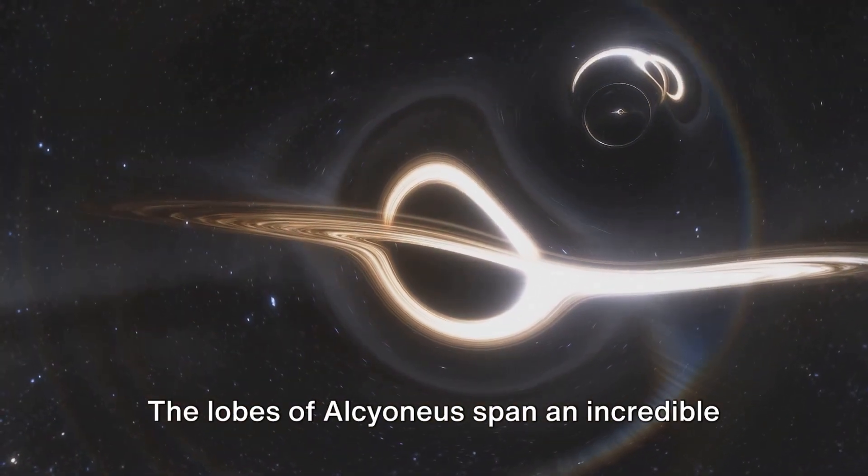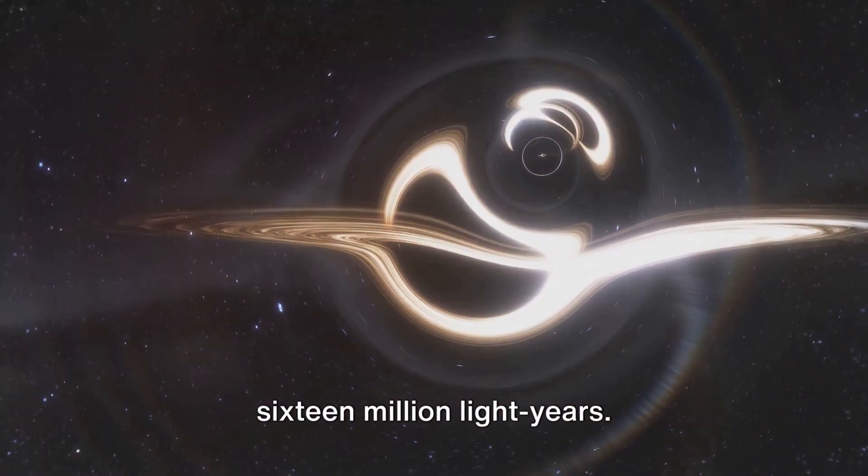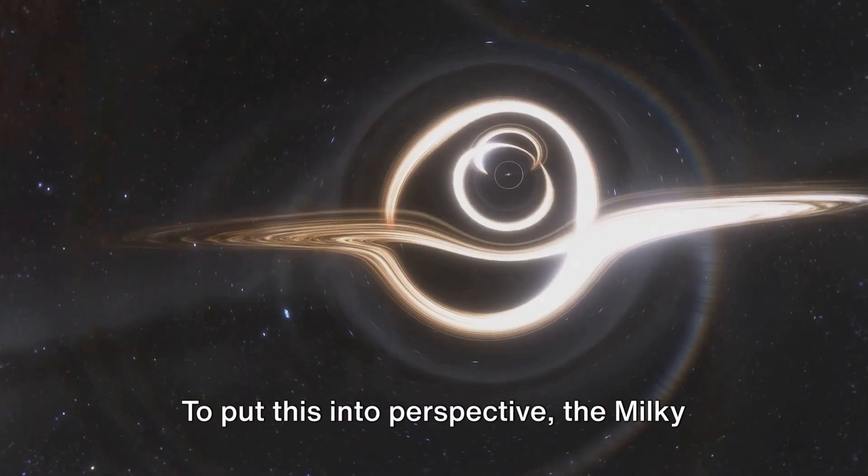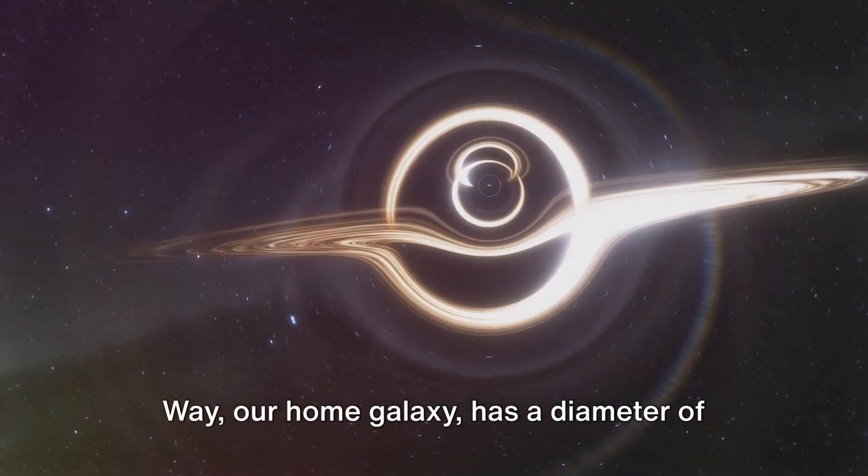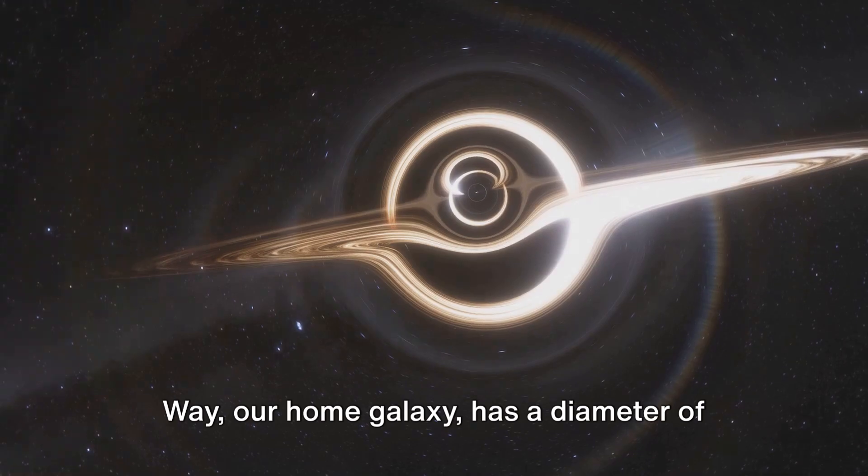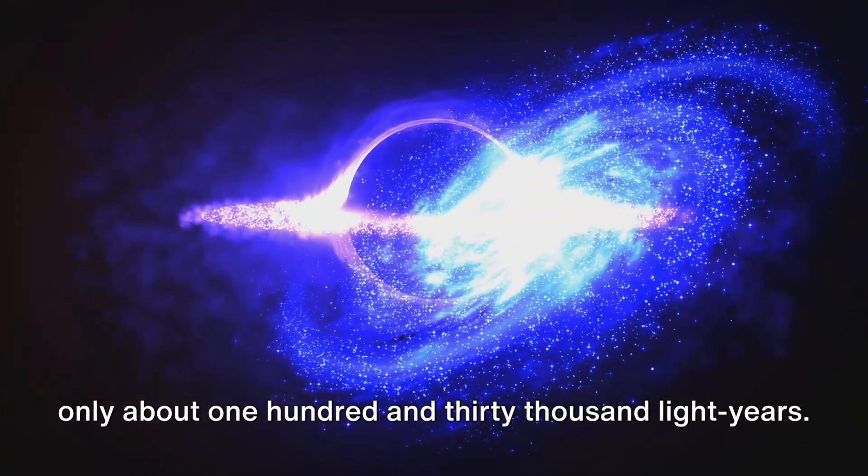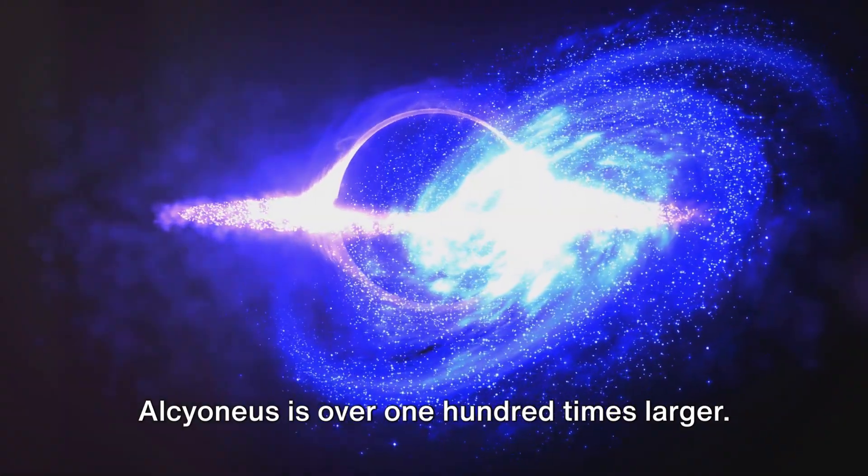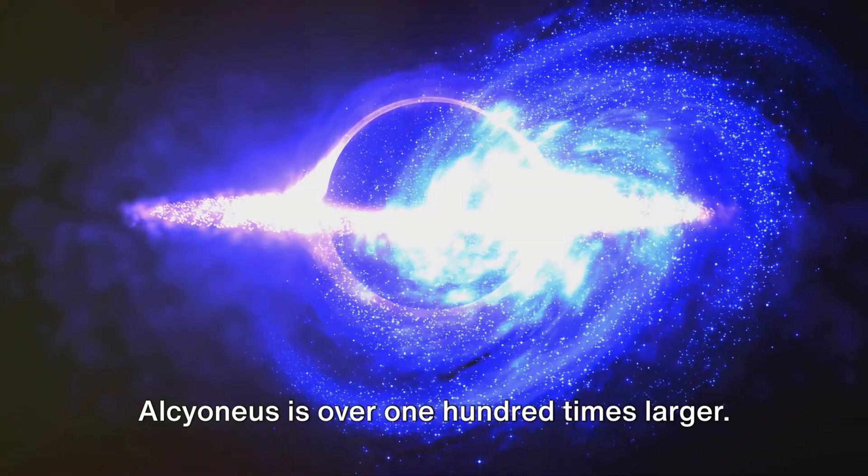The lobes of Alcyoneus span an incredible 16 million light years. To put this into perspective, the Milky Way, our home galaxy, has a diameter of only about 130,000 light years. Alcyoneus is over 100 times larger.